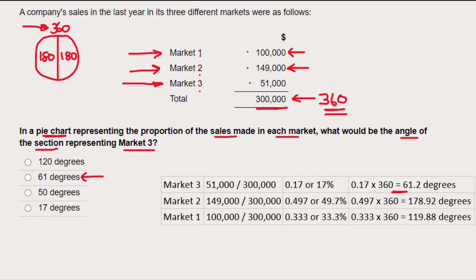Doing exactly the same calculations — taking the sales total for each market, so 149,000 for market two and 100,000 for market one — and working out what they are as a percentage of total sales, then applying that to 360 degrees, I get 178.9 for market two and 119.8 for market one. Adding all three together: 61.2, 178.9, and 119.8 — yes, they come back to 360 degrees.